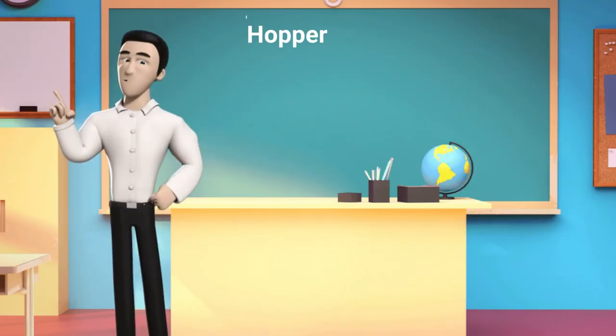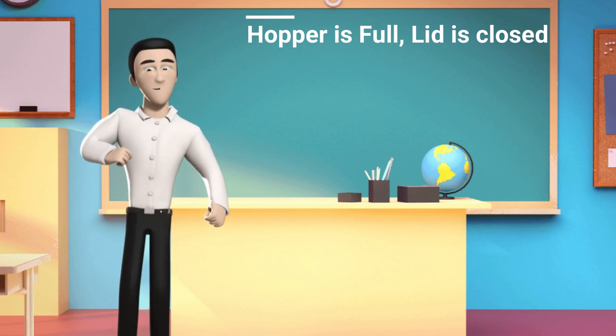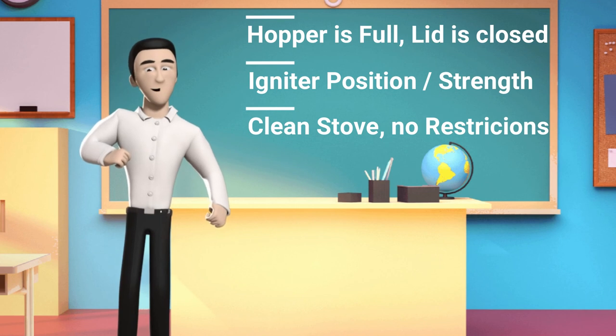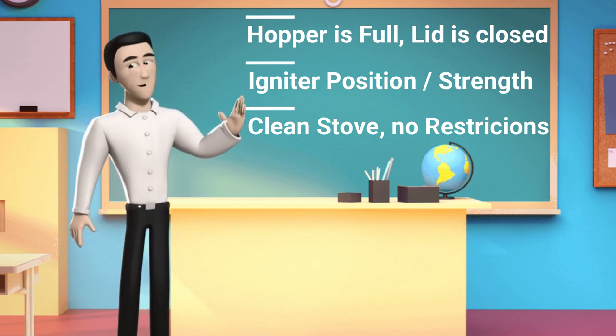To recap: make sure the hopper is full and the auger is feeding, make sure the igniter is properly positioned and getting hot, and make sure the stove is clean and there is nothing impeding the airflow.